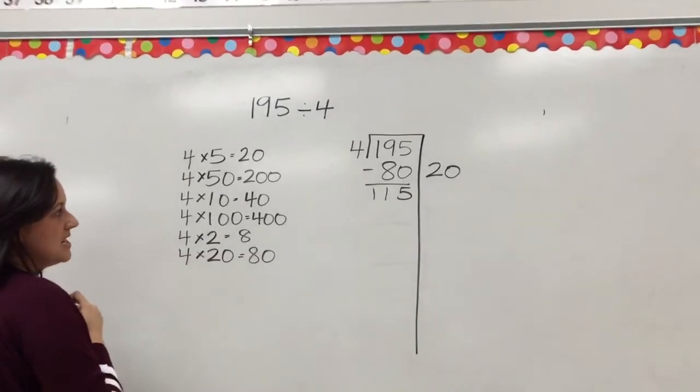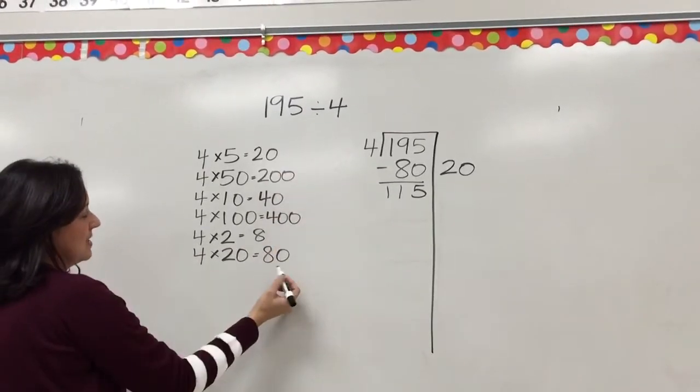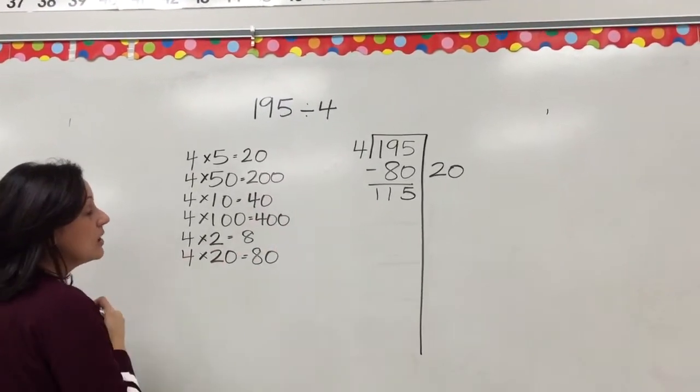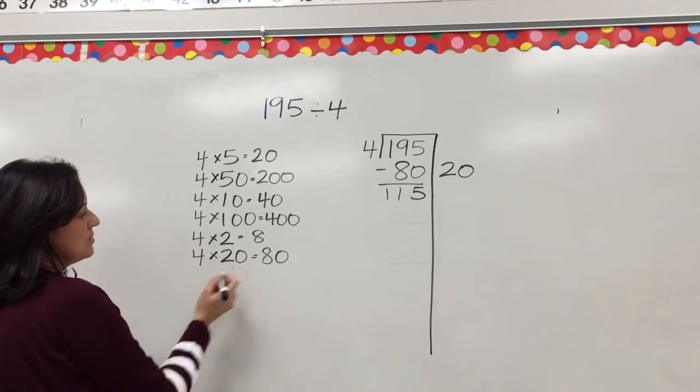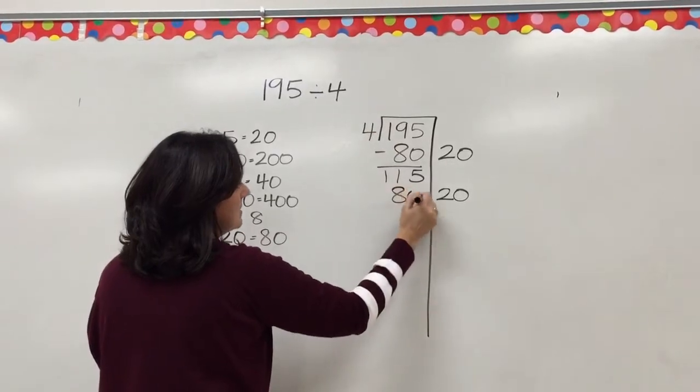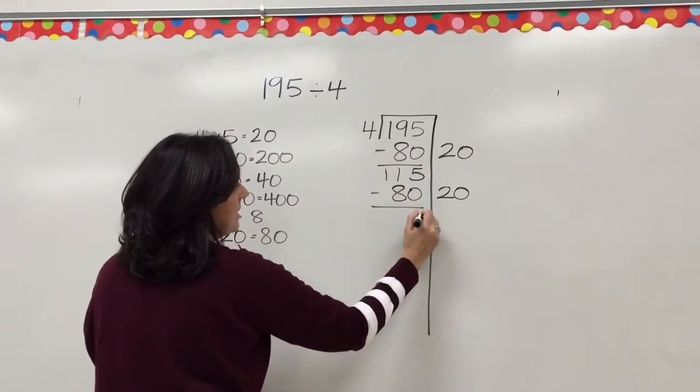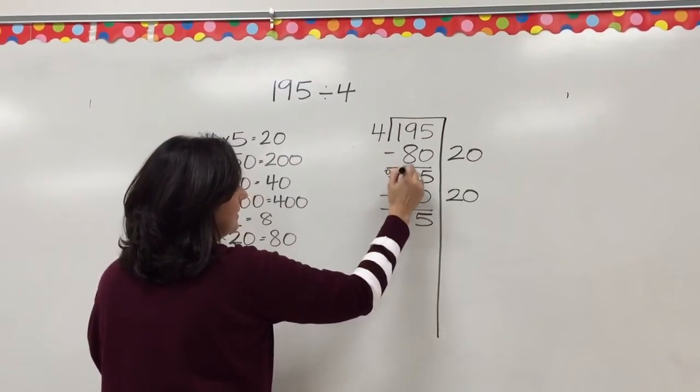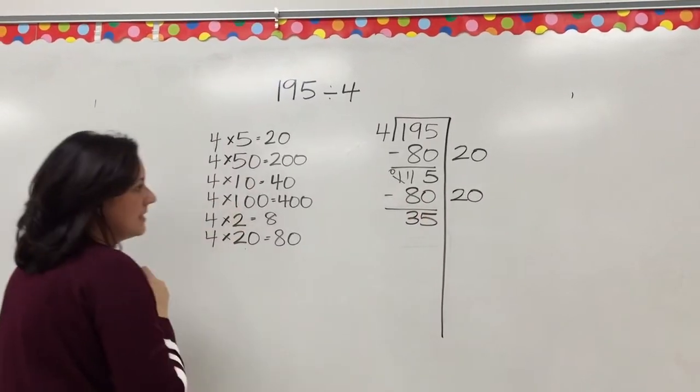I'm left with 115. Again, I'm going to ask myself, which one of these benchmarks gets me close without going over? We can use 20 again. 20 times 4 is 80. And we subtract again. Now we're at 35.